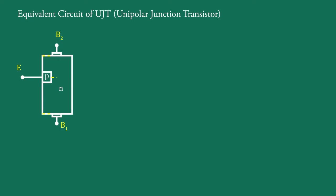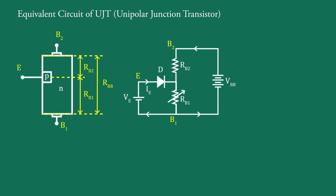In this video we will learn about the equivalent circuit of UJT — the uni-junction transistor. This is a simple block diagram of UJT, and this is its equivalent circuit. The equivalent circuit contains two resistors, in which one is RB1, which is variable, and the other is RB2, which is fixed, and one diode D.